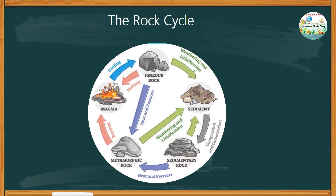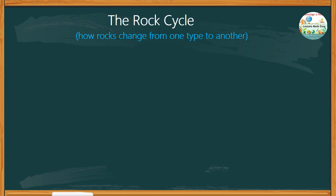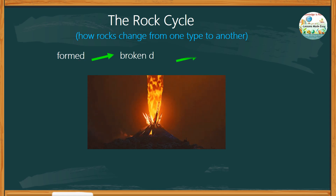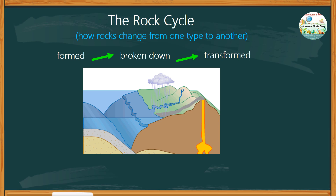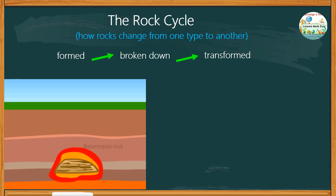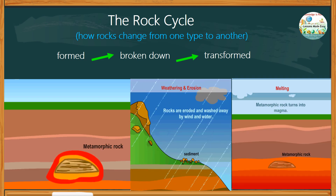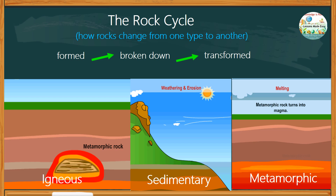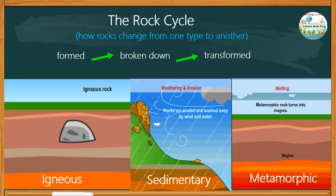The rock cycle is a continuous process that describes how rocks change from one type to another. It explains how rocks are formed, broken down, and transformed through various geological processes driven by the Earth's internal heat, pressure, and surface conditions, where the three main types of rocks — igneous, sedimentary, and metamorphic — are altered under extreme situations.